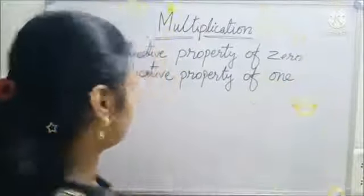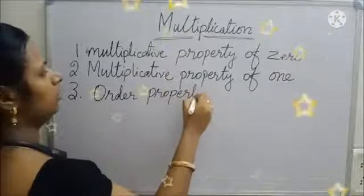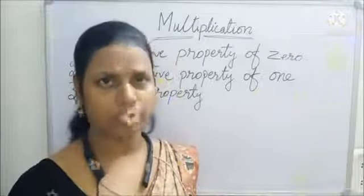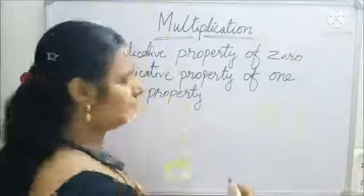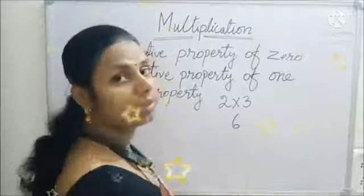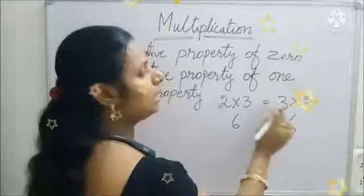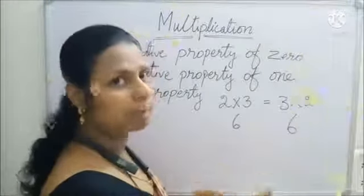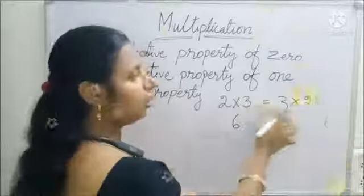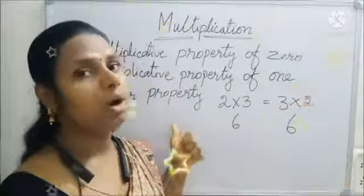The third property is the order property of multiplication. Whenever you multiply, you may have two or more numbers. For example, two multiplied by three — two threes are six. The same time, three multiplied by two — three twos are six. So when you change the order of the numbers, there will be no difference in the product. This is called the order property.